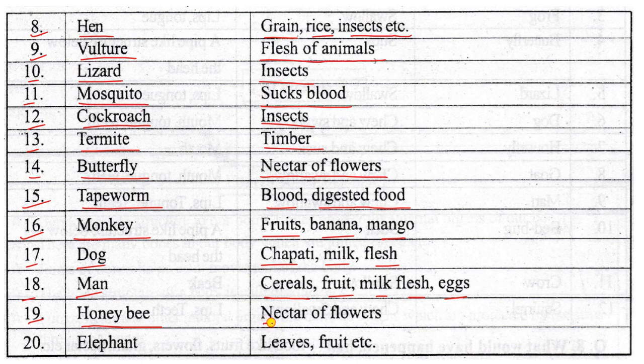Number nineteen: honey bee — nectar of flowers — herbivorous. Number twenty: elephant — leaf, fruit — herbivorous.